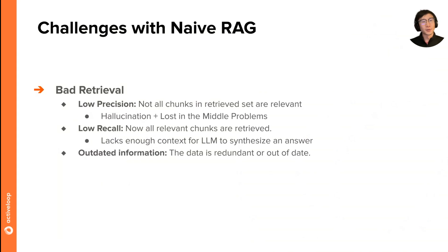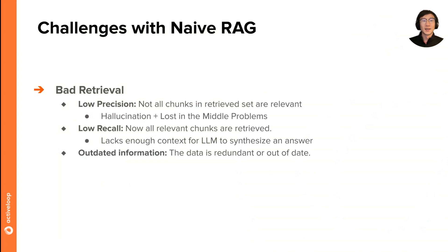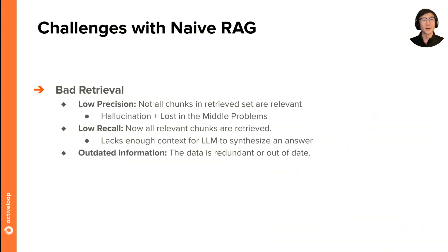There are a few aspects of this. One is low precision, where not all the chunks in the retrieved set are actually relevant to the question. For instance, if your chunk sizes are too big or your top K is too high, you might get a lot of fluff in the retrieved context. Studies have shown that stuffing the context window of LLMs with useless context can cause confusion, especially if relevant information is lost in the middle of the context, causing performance to degrade.